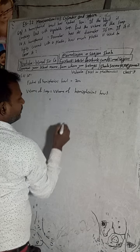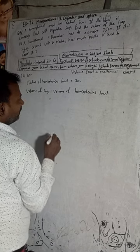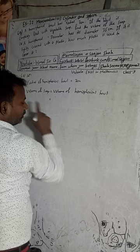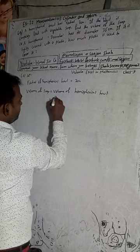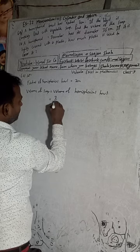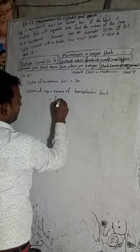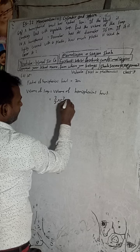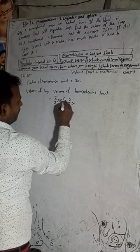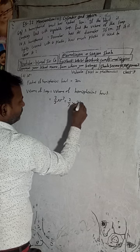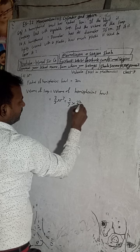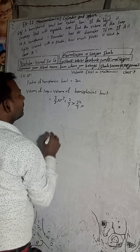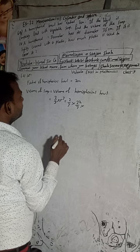For the hemisphere, the formula is 2/3 π r³. So we substitute: 2/3 × (22/7) × r³, where r equals 7.